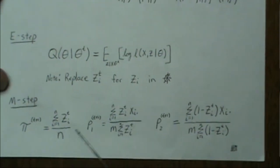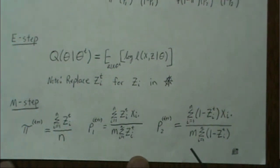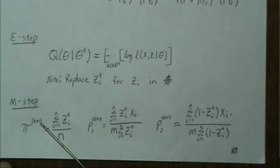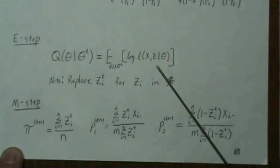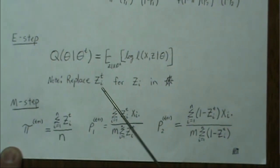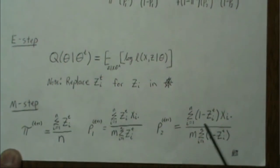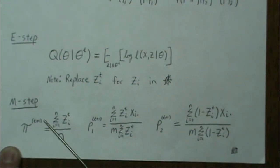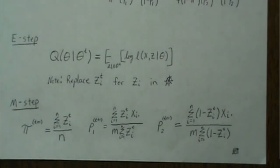So we've found the expected value and the M-step maximum likelihood estimates. Then we obtain the t+1 estimates, plug them back into the Z expression to get Z_i^{t+1}, recalculate to get P1^{t+2}, P2^{t+2}, pi^{t+2}, and keep repeating until convergence.